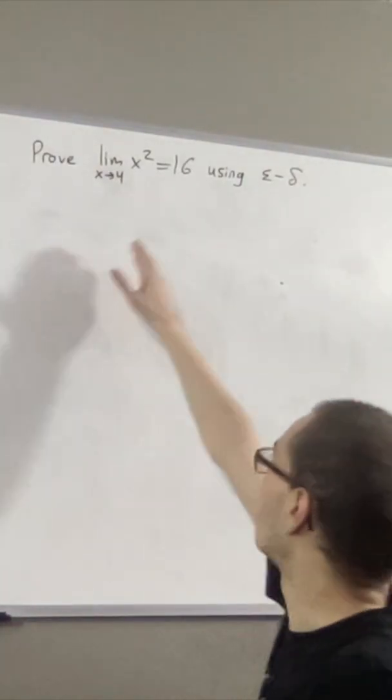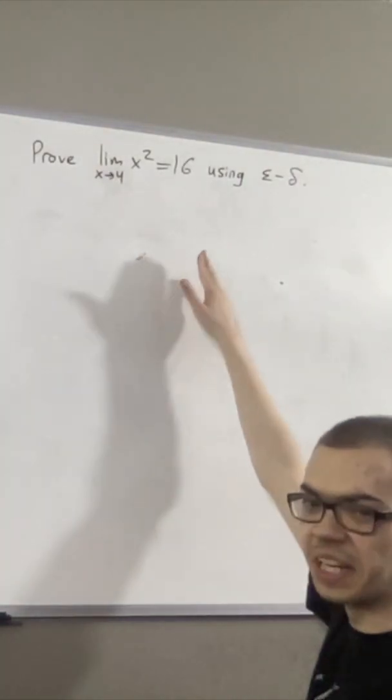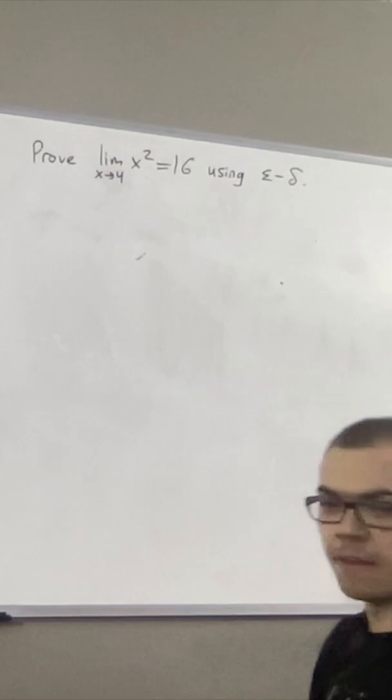Prove that the limit as x approaches 4 of x squared is equal to 16 using the epsilon-delta definition of a limit.